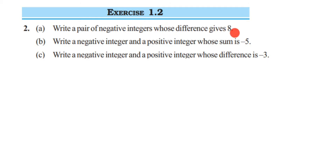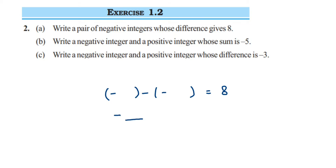So when you subtract two negative integers, you have two negative integers and when you subtract them you get 8, which is a positive number. When subtracting integers, you have a minus sign and also another minus sign — minus and minus will become plus, remember that. So this will become minus, then plus, and the second number equals 8.